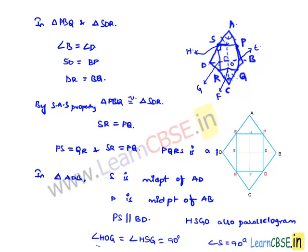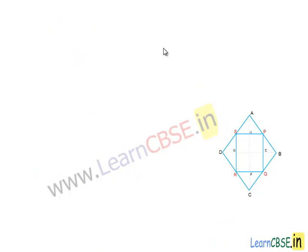Now we know that PQRS is a parallelogram in which one of the angles is 90 degrees. Therefore, we can say that PQRS is a rectangle.